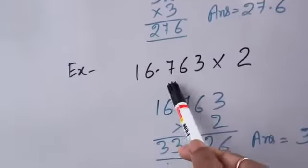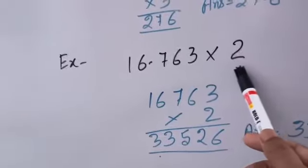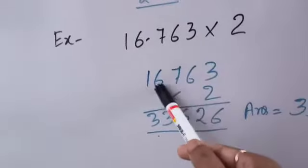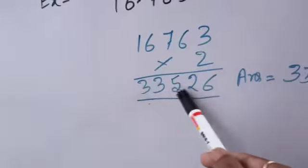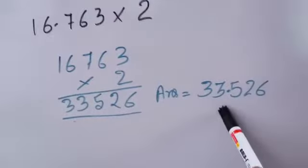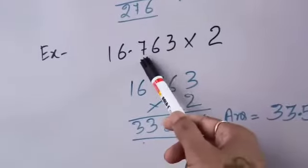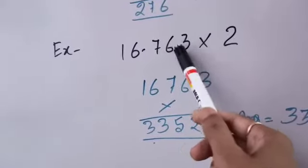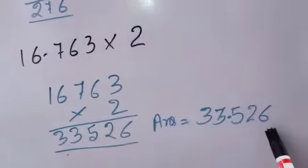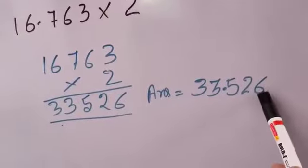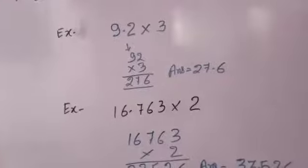In the second example, the multiplicand is 16.7623, multiplied by 2. First we write the number without the decimal and multiply by 2 — the answer is this. When we write the final answer, we put the decimal after the same number of digits as given in the multiplicand. Here there are 4 digits after the decimal — 1, 2, 3, 4 — so we put the decimal after 4 digits.